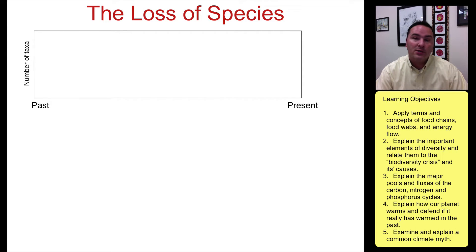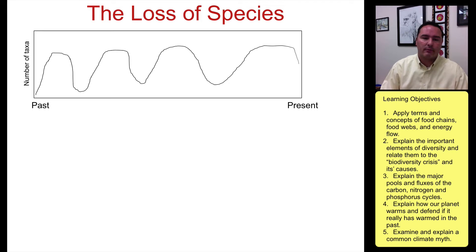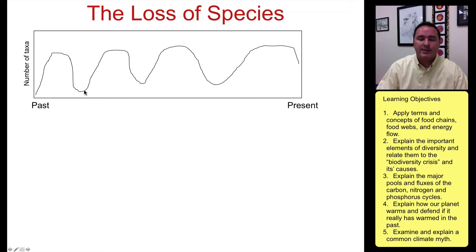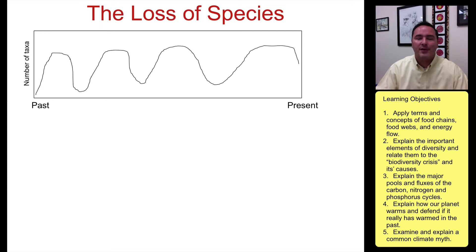In ecology we talk about the biodiversity crisis because we're losing species like we've never seen before. Over millions of years there have been times when a large proportion of biodiversity on the planet has gone extinct — like when the meteorite hit the earth and changed the climate, eventually leading to the dinosaurs going extinct. There are other events where we've lost 70 to 80 percent of all diversity on the planet.